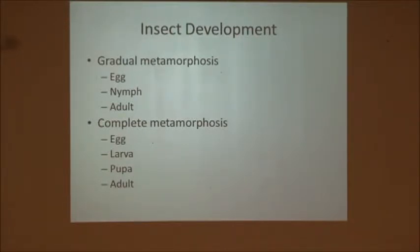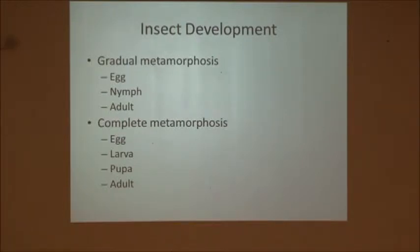Complete metamorphosis has a couple of extra stages in there — starting out with an egg, then you develop into a larva, a pupa, and adult. So there's different forms. It happens over a longer period of time and there are different body structures and different forms for each one of these stages.